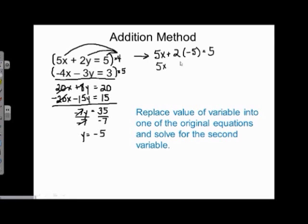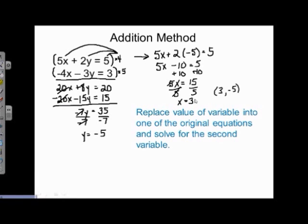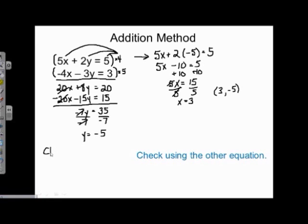So I have 5x plus 2 times negative 5 equals 5, which gives 5x minus 10 equals 5. Adding 10 to both sides gives 5x equals 15. Dividing both sides by 5 gives x equals 3. So if we've done this correctly, the two lines should cross at the point (3, negative 5).